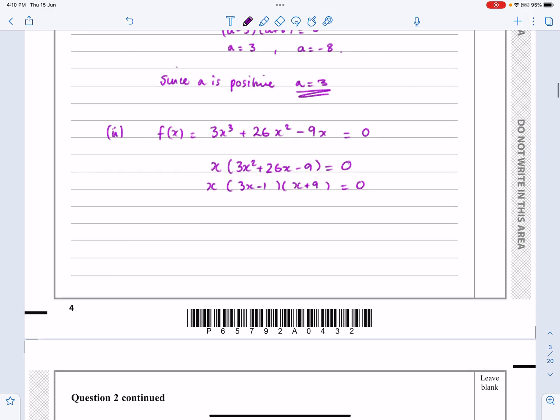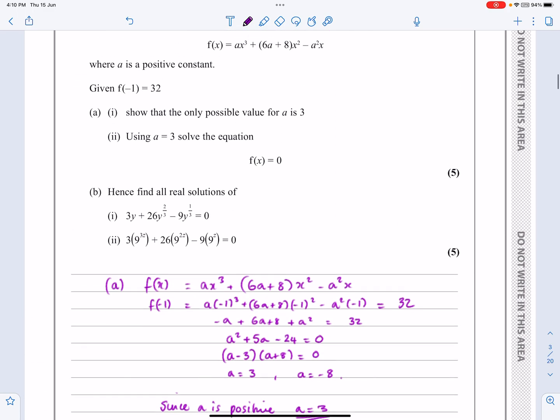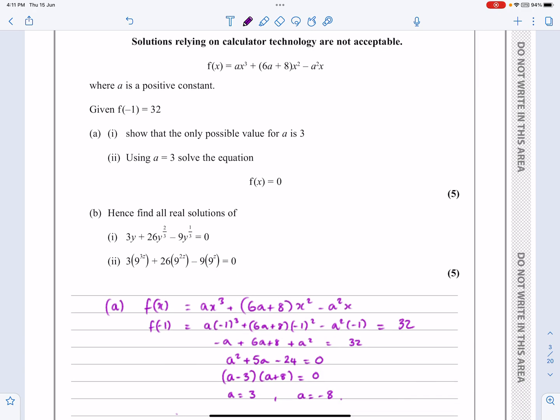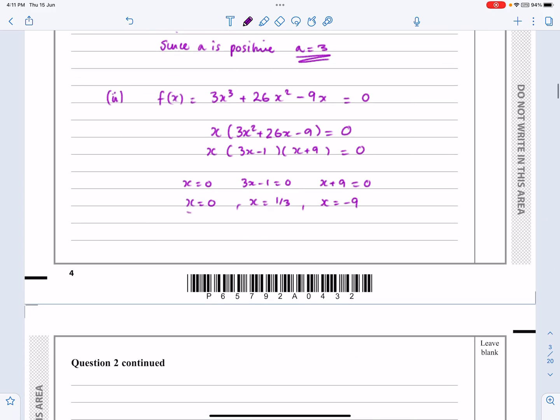So we have our possibilities for x being x equals 0, 3x minus 1 equals 0, or x plus 9 equals 0, which gives me x equals 0, it's going to give me x equals a third, or it's going to give me x equals minus 9. Let's just go back and say, yeah, it didn't have any specifications on that one. Just solve it. So those are my three answers: x equals 0, x equals a third, and x equals minus 9.